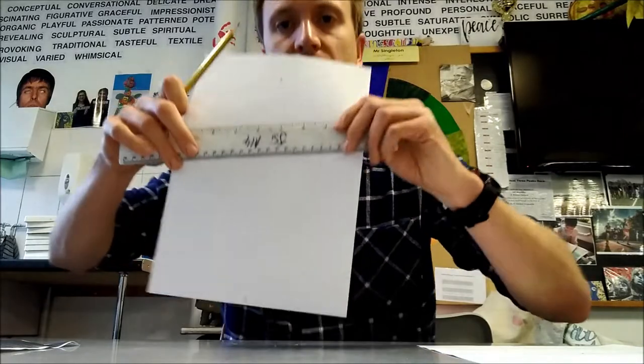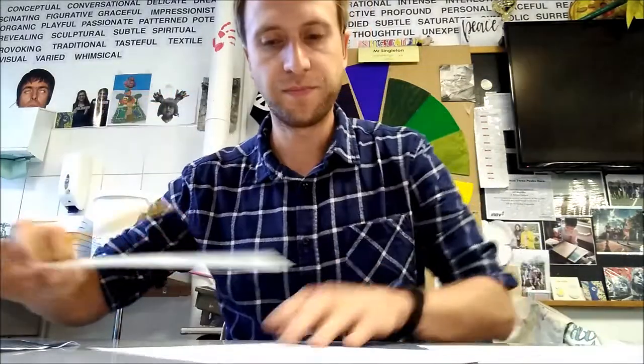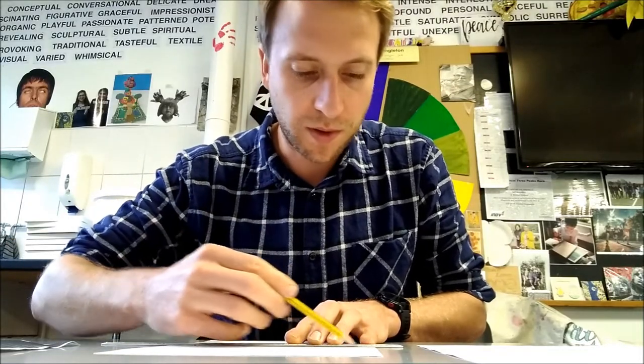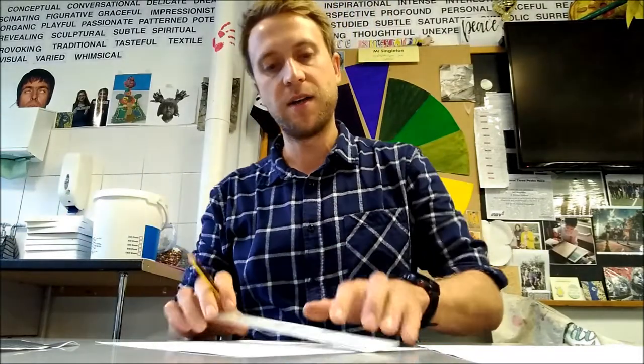So you then get your ruler and line it up with the two marks that you've done either side and press down very lightly to create a cross on your paper. So I'm doing a line across there and a line the other way around and you will finish off with a cross across your page.